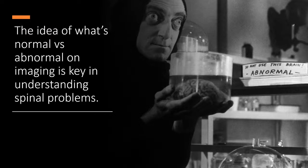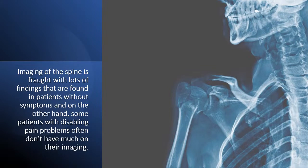The idea of what's normal versus abnormal on imaging is key to understanding what's wrong in your neck or your back. The problem is if you take imaging in isolation, we often see patients with awful-looking necks or backs on MRI but they don't have a lot of symptoms. At the same time, we see patients who don't have much on their MRI who are disabled. There's often a disconnect between imaging and what's wrong with the person, so you can only use imaging as one part of the puzzle.